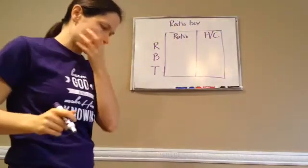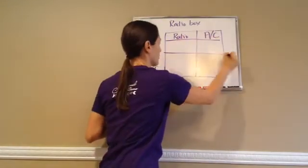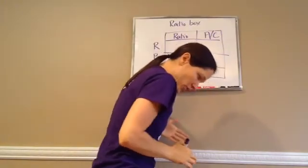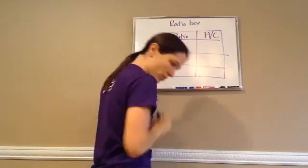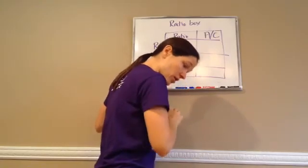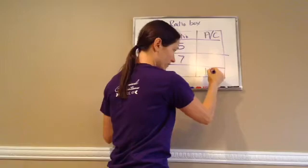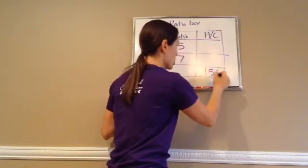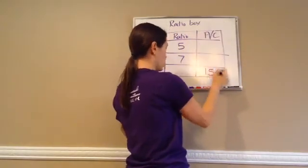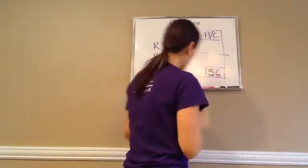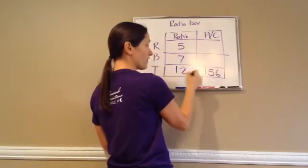The ratio of red marbles to blue marbles is 5 to 7 — so ratio: red is 5, blue is 7. There are 156 marbles total — that goes in actual count for total marbles. The 156 goes on the actual count side, not the ratio side. Can we figure out the total of the ratio? Yes: 7 plus 5 is 12. So the ratio total is 12.